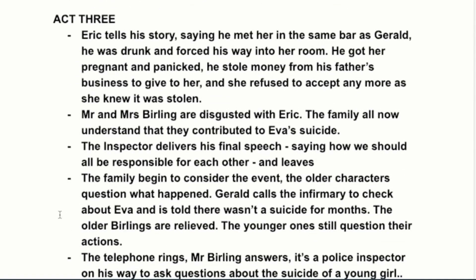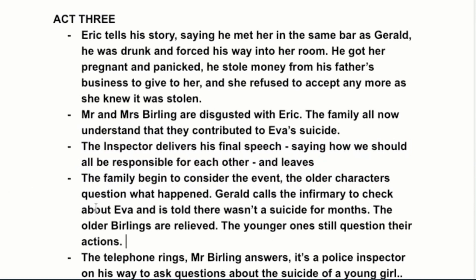Act Three opens with Eric's account. He met Daisy in the same bar as Gerald. Eric is an alcoholic — he was drunk when he forced his way into her room and got her pregnant. He did have feelings for her but she treated him like a child. When he found out she was pregnant he had no job, so he stole money from his father's business to give to her. When she realised it was stolen, she refused to accept any more help — which is why she ended up at the women's charity.